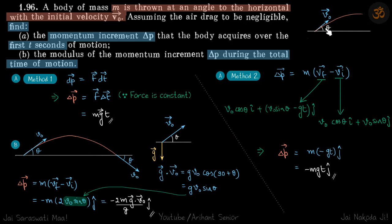And final velocity: in x direction velocity is constant so v0 cos theta i cap plus v0 sin theta minus gt into j cap. So here if you just subtract vf minus vi, you'll be left with m into minus gt into j cap, or minus mgt j cap. So both are the same things because minus g into j cap is g vector.